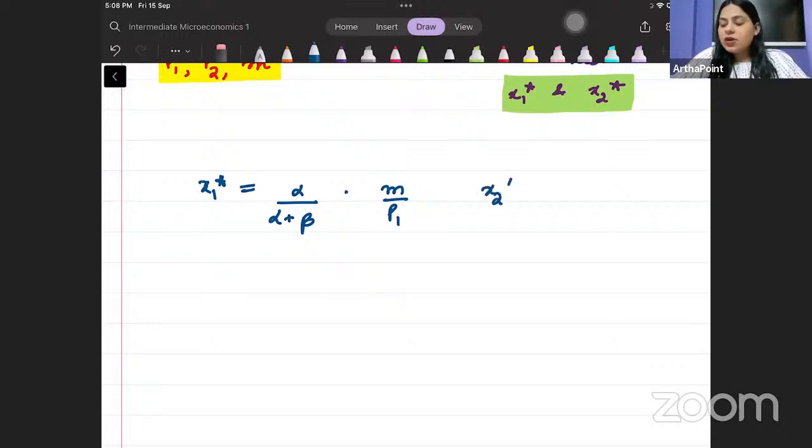Similarly Beta, the optimal demand of x2 that I had got, that was beta upon alpha plus beta, M by P2. So the optimal demands that I had got of good 1 and good 2, they were a function of income and prices. Clear how much this is?